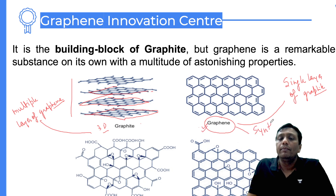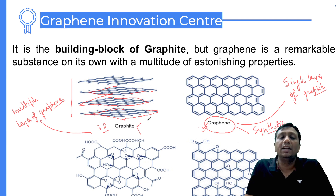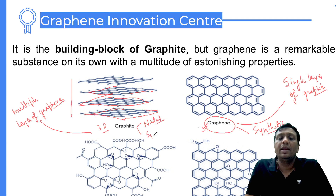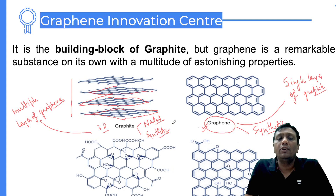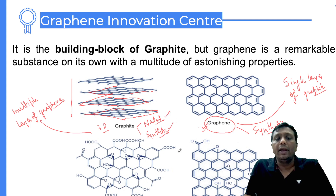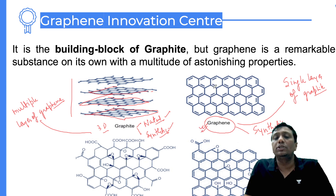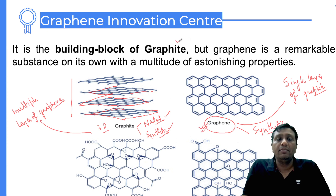One important thing: graphene is totally synthetic - entirely developed by human beings, not available anywhere in nature. But graphite is naturally available, and graphite can also be produced synthetically if required. From graphite you can also develop graphene. So graphene has a lot of properties and strength.